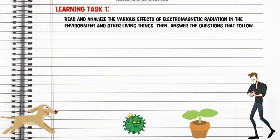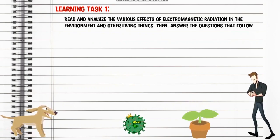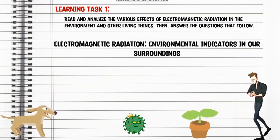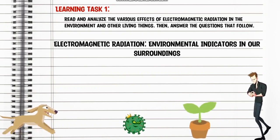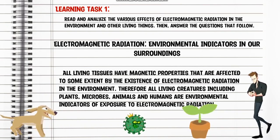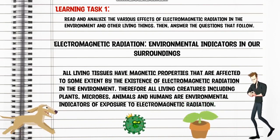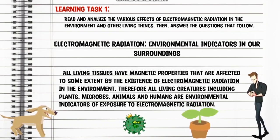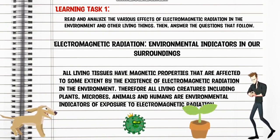For your learning test 1, you have to read and analyze the various effects of electromagnetic radiation in the environment and other living things, then answer the questions that follow. Electromagnetic radiation — environmental indicators in our surroundings. All living tissues have magnetic properties that are affected to some extent by the existence of electromagnetic radiation in the environment. Therefore, all living creatures, including plants, microbes, animals, and humans, are environmental indicators of exposure to electromagnetic radiation.